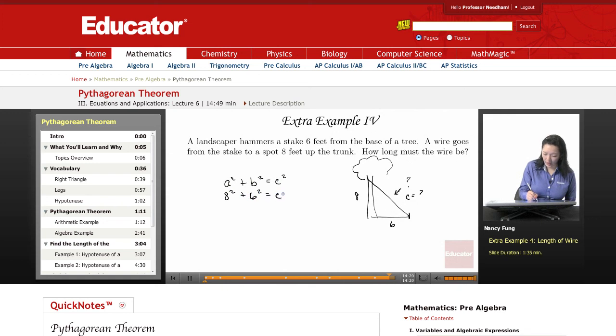Six, six squared is going to equal the wire squared, the length of the wire. Sixty-four plus 36 equals C squared. Sixty-four plus 36 is 100.